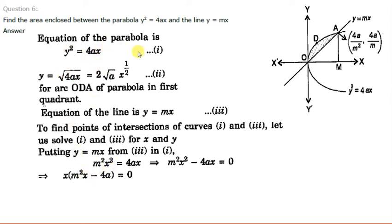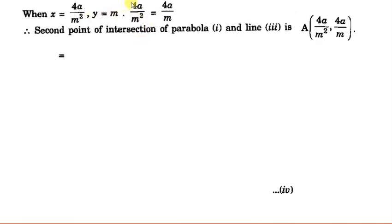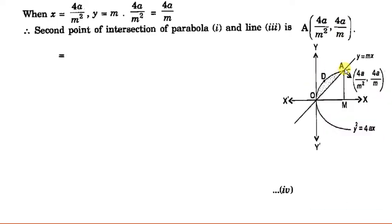Then in equation number 1 we get M²x² equal to 4ax. Transferring 4ax to the left hand side and taking x common we have x(M²x − 4a) = 0. So from here we get either x is 0, or M²x − 4a = 0, giving x equal to 4a/M². When x is 0, from equation 3 we get Y is also equal to 0, so (0,0) is one point of intersection. When x is 4a/M², then Y is M × 4a/M² = 4a/M. So the other point of intersection is (4a/M², 4a/M), which is point A.